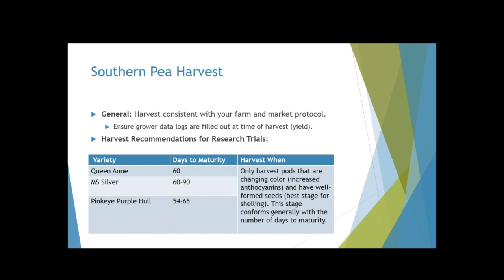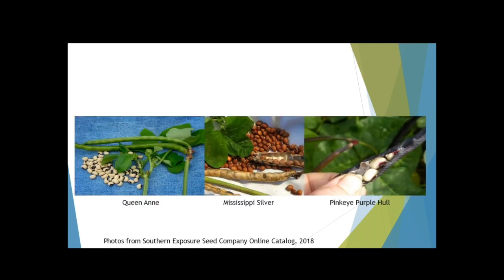For southern peas, we're growing three varieties in the on-station research trials and you may have one of these on your farm — from Queen Anne to Mississippi Silver to Pink Eye Purple Hull. We're harvesting these at best stage for shelling for research purposes. Include all that information on your grower data logs at harvest.